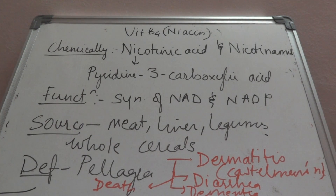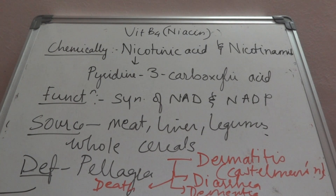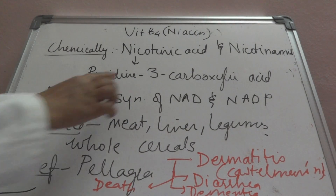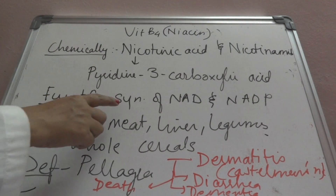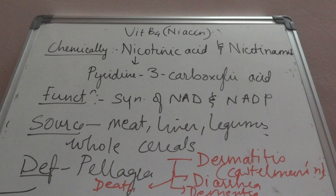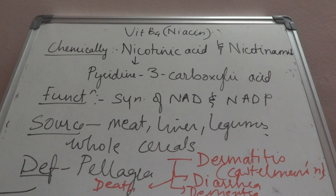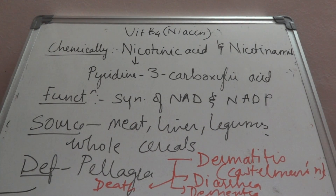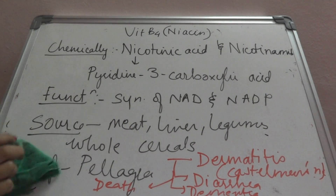So vitamin B3, niacin — chemically it is nicotinic acid and nicotinamide, it has pyridine-3-carboxylic acid structure. The most important function is synthesis of NAD+ and NADP+. Sources are meat, liver, legumes, and whole cereals, and the deficiency causes pellagra.